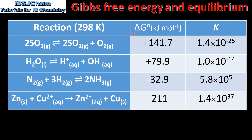Next we'll compare the values of the standard change in Gibbs free energy and the equilibrium constant K for different reactions. In the first reaction we have a large positive value for ΔG° and a very small value for K. In the next reaction we also have a positive ΔG° and a small K. Next we have a negative ΔG° and a relatively large K. And finally we have a large negative ΔG° and a very large K.